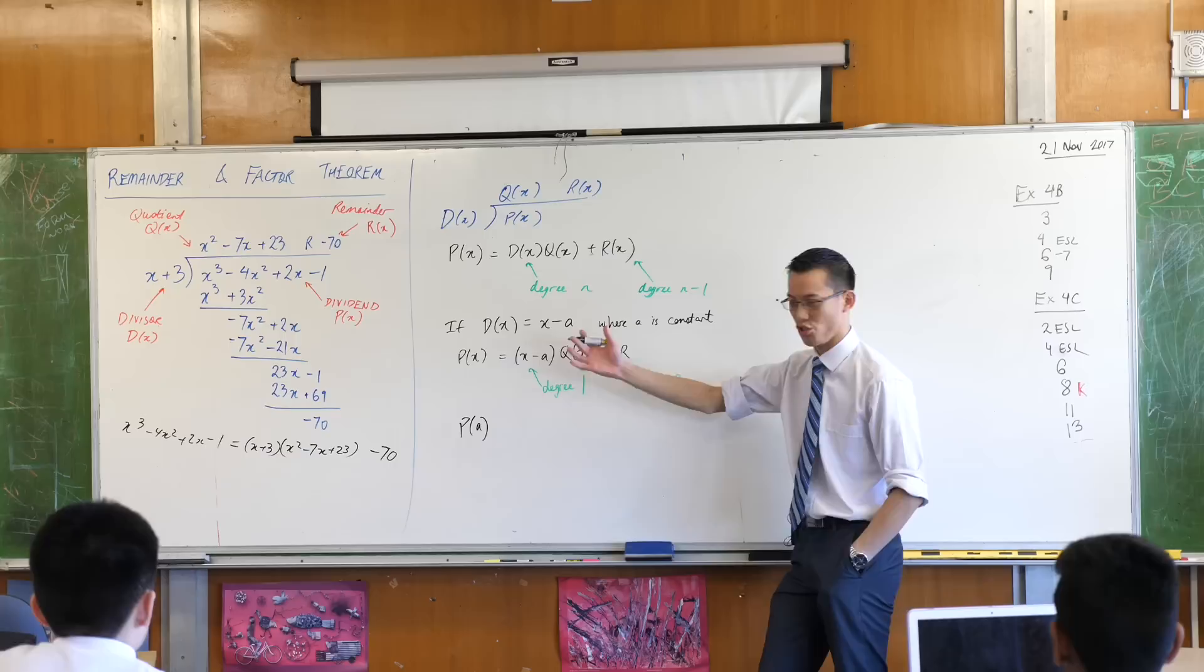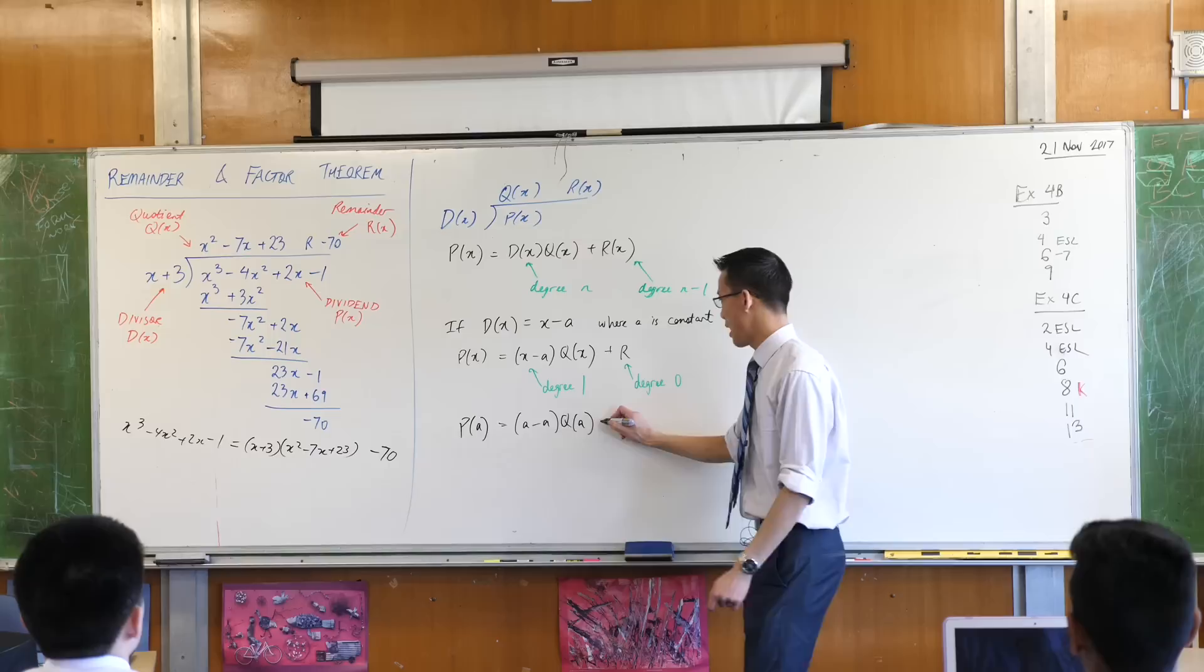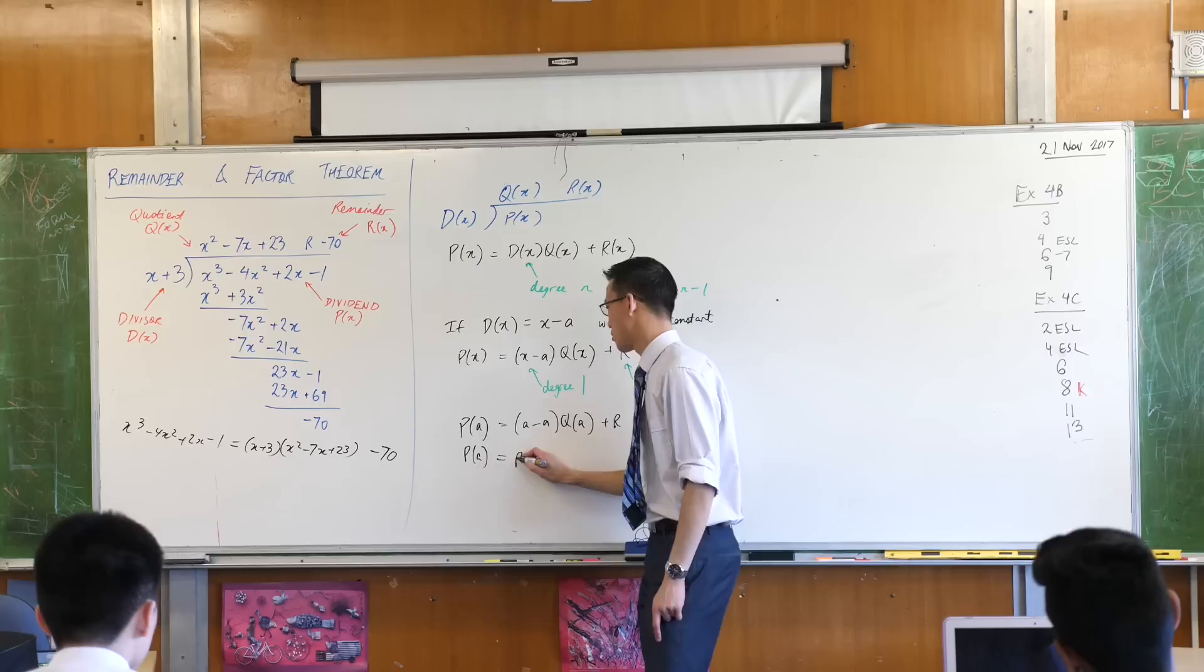If I substitute in x equals a, this is just using function notation, then what happens? Well, I'm going to put in an a everywhere I see an x. I see it two places. I see it there once and I see it there twice. And then of course the remainder is independent of x, so it just sits out there on the side. Well, this is just zero. So what I find is that P of a equals the remainder.